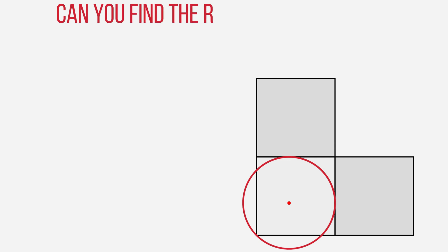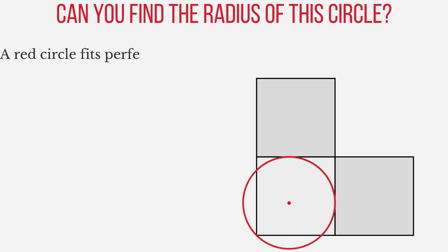Take a look at this red circle. It fits perfectly into the corner made by 3 unit squares. Your challenge is to figure out its exact radius. Seems simple? Let's see.